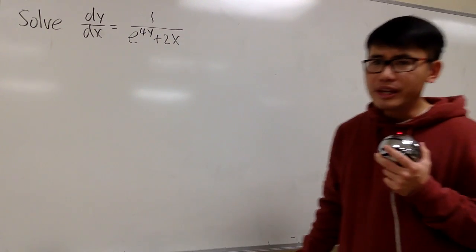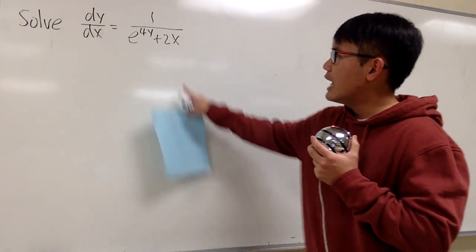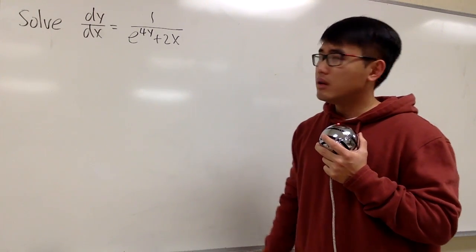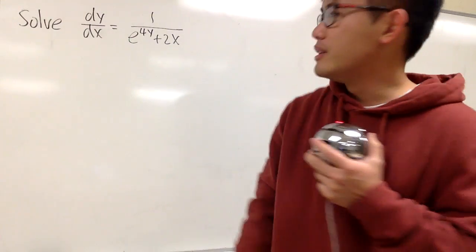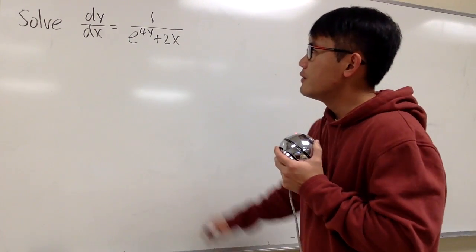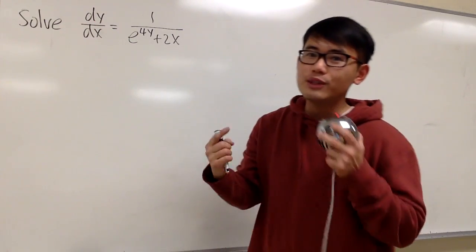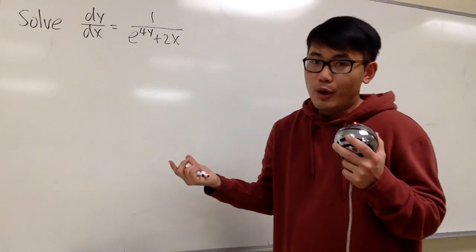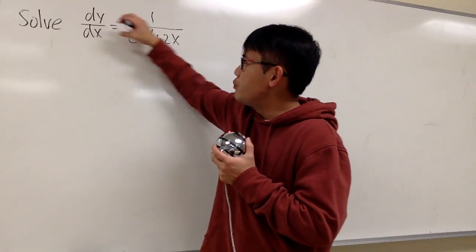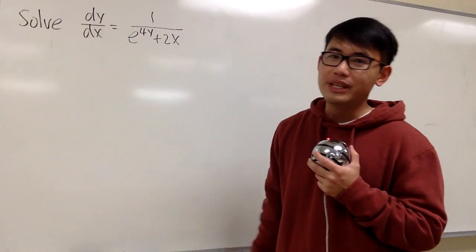However, wouldn't it be nice if I don't have this in the denominator? Can I do that? Let's see. So here is the deal. What if, instead of looking at this as dy/dx, let's reverse the rule. So I will be looking at this as dx/dy. All in all, we are just going to be taking the reciprocals on both sides, and let's see what we get after that.